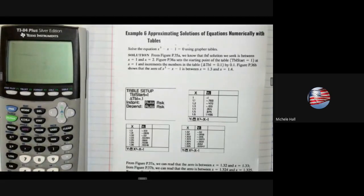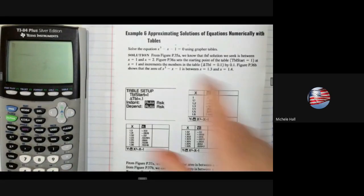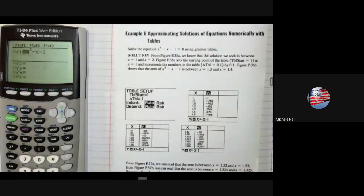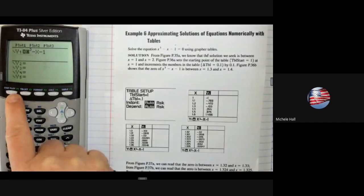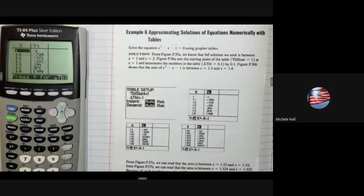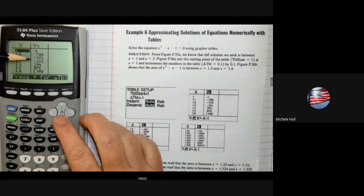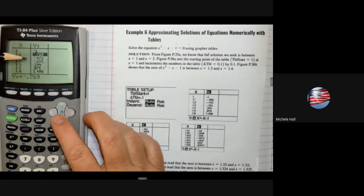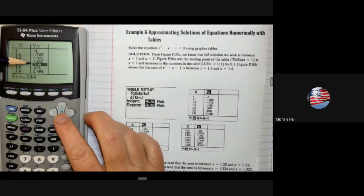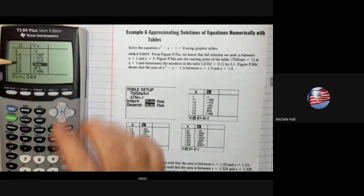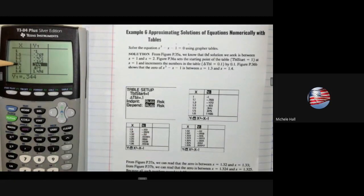We can also approximate solutions using tables. Here is the function that I already have in my graphing calculator. I know it's between 1 and 2, and I'm looking for when y is 0. Negative, negative, negative, and then it goes to positive. So between negative 0.1 and 0.3, that is where 0 is. So my number is between 1.3 and 1.4.